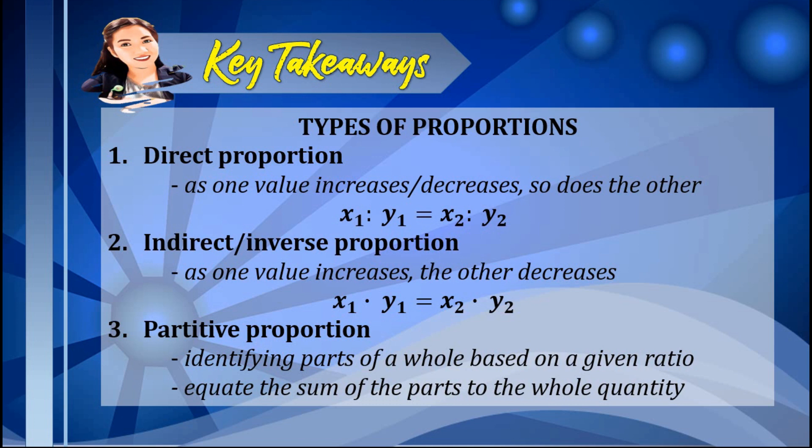What are the key takeaways? Each type of proportion has its own unique application. Learn first to identify the type of proportion a problem has before proceeding to solving it. For direct proportion, as one value increases or decreases, so does the other; solve by setting the product of the extremes equal to the product of the means. For inverse proportion, as one value increases the other decreases; solve by equating the products of the two ratios. For partitive proportion, a whole is divided into parts based on a given ratio; solve by equating the sum of the parts to the whole quantity.